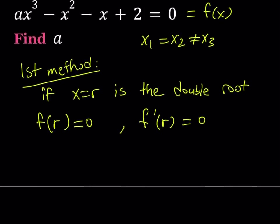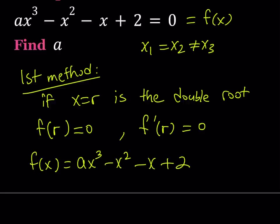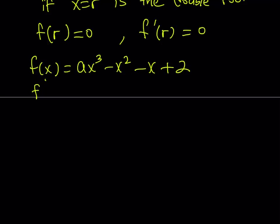Let's take this expression f of x — ax cubed plus x squared minus x plus 2 — and differentiate it. If you differentiate f you get 3a x squared minus 2x minus 1. Now we're saying that r is going to be a root of both of these polynomials since it's a double root. So let's go ahead and replace x with r in both of these equations.